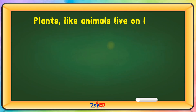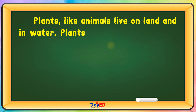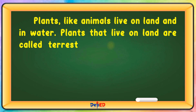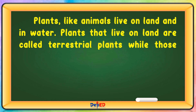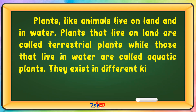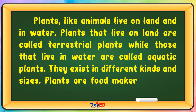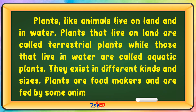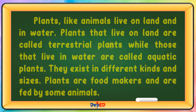Plants, like animals, live on land and in water. Plants that live on land are called terrestrial plants, while those that live in water are called aquatic plants. They exist in different kinds and sizes. Plants are food makers and are fed by some animals.